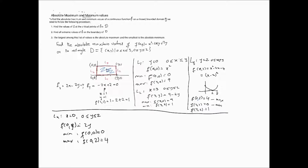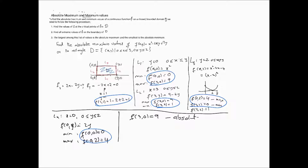Those are all our candidates: the critical point value and the boundary values from L1 through L4. Of these, the largest value is 9, occurring at f(3,0) — that is our absolute maximum. The smallest value is 0, occurring at two points: (0,0) and (2,2) — that is our absolute minimum. This is how we calculate absolute maximum and minimum values of multivariate functions.